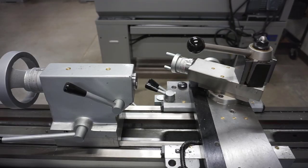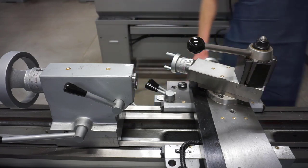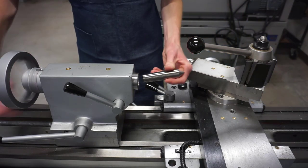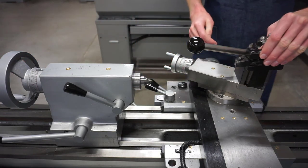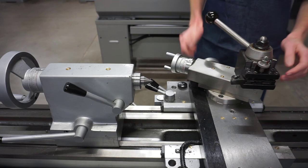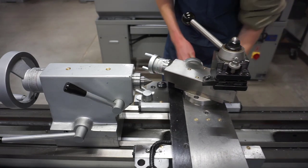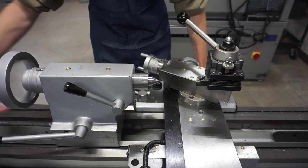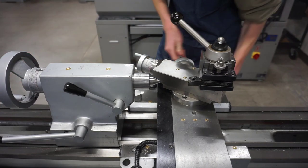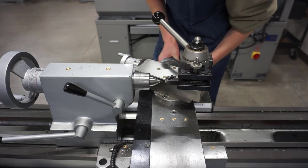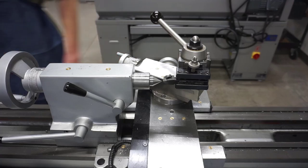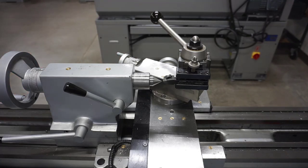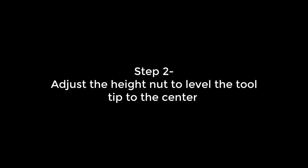In this first video we're going to look at how we will level the tool post. The first thing you're going to want to do is to grab a center to put in the tail stock. In this instance we're using a dead center mounted in the tail stock. Then grab your tool holder, your tool holder may be a right, left, or center. Extend the tail stock out so that we can reach it with the tool tip, and then move the tool tip to approximately align with the end of the center. Now that you have the tool tip aligned to the center approximately, we'll take a closer look.